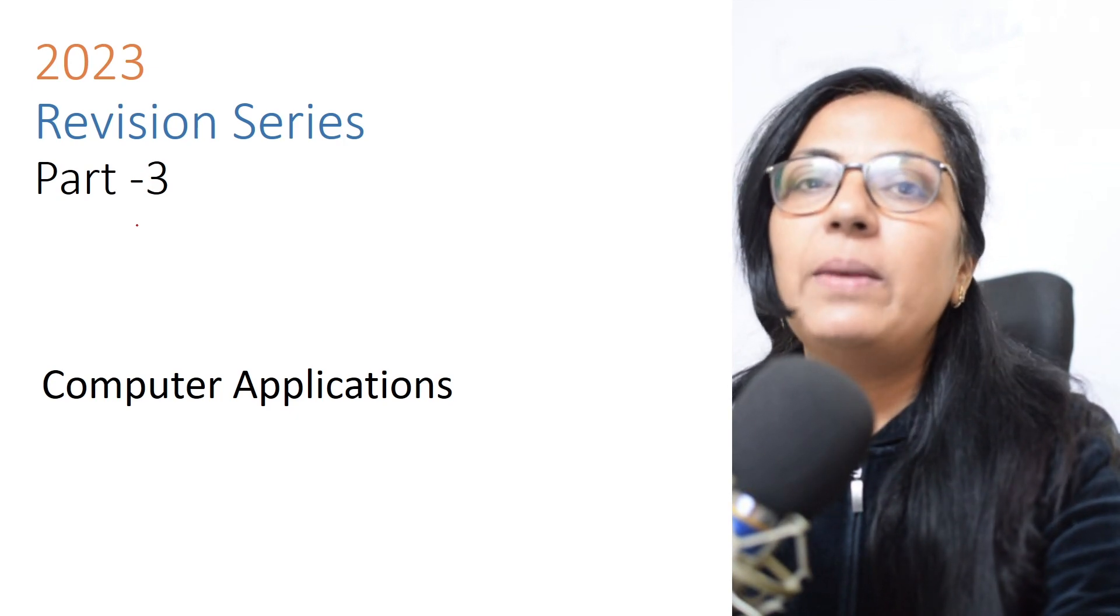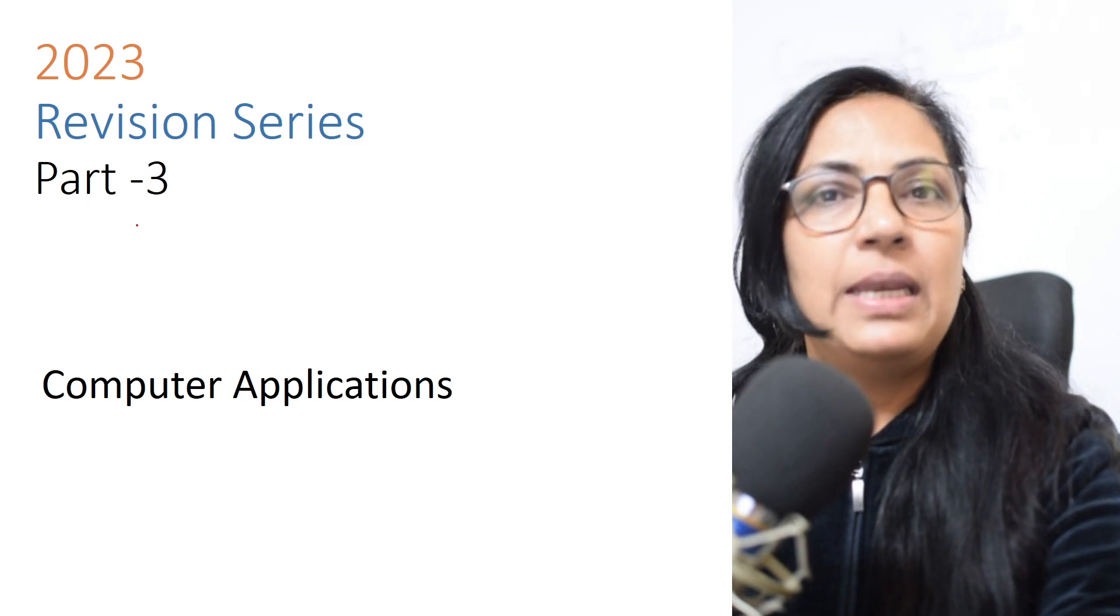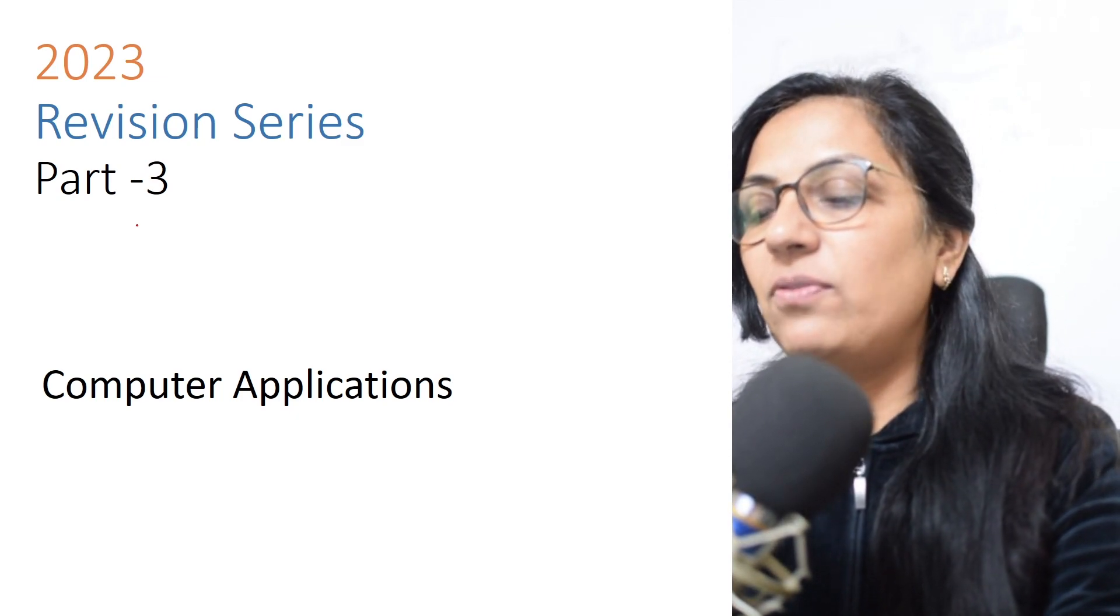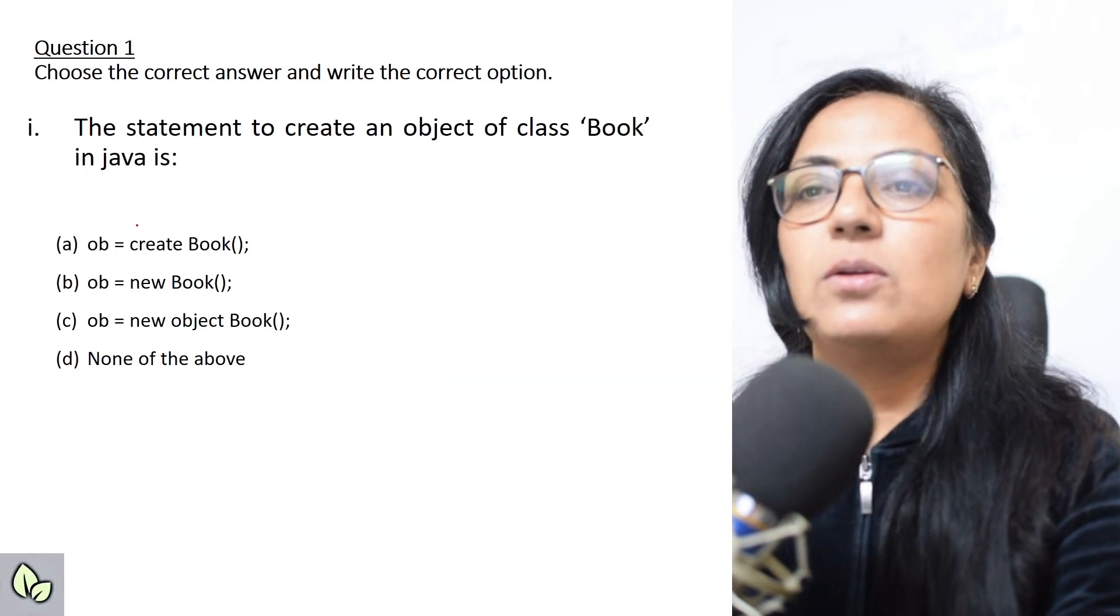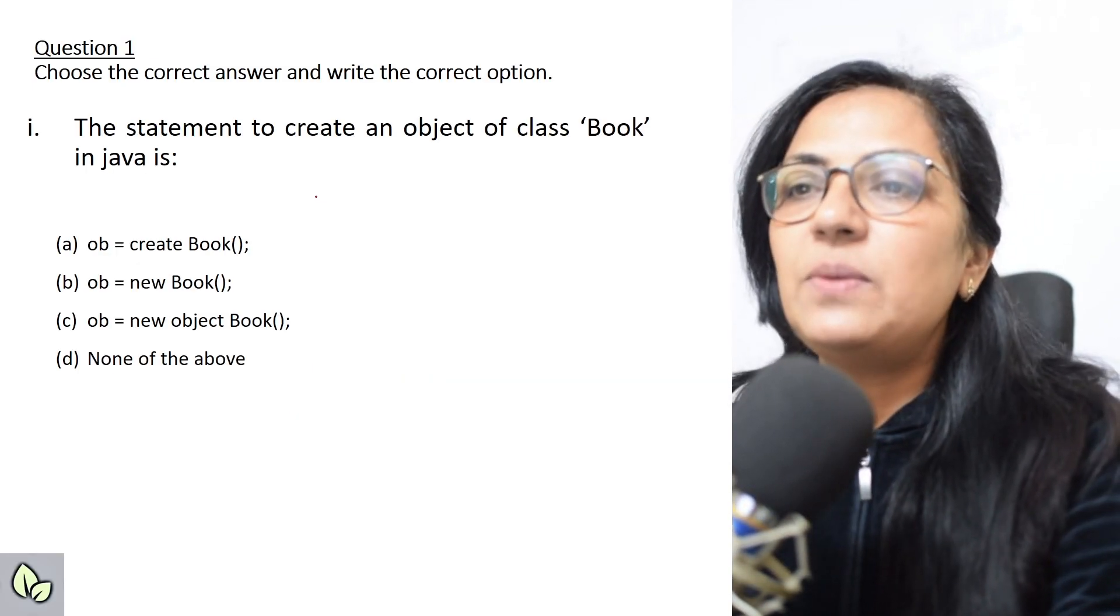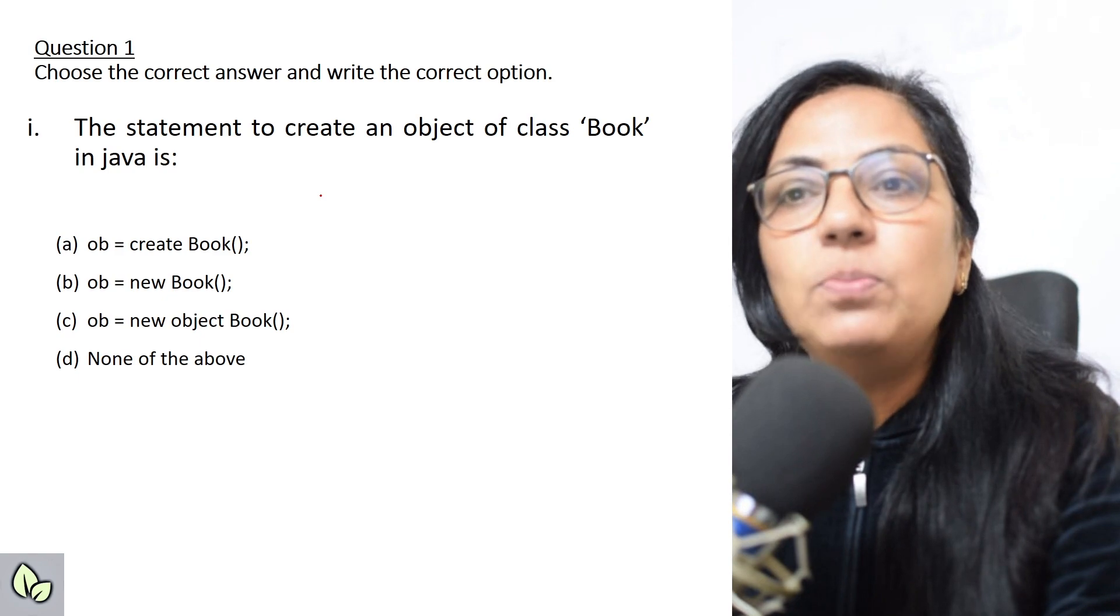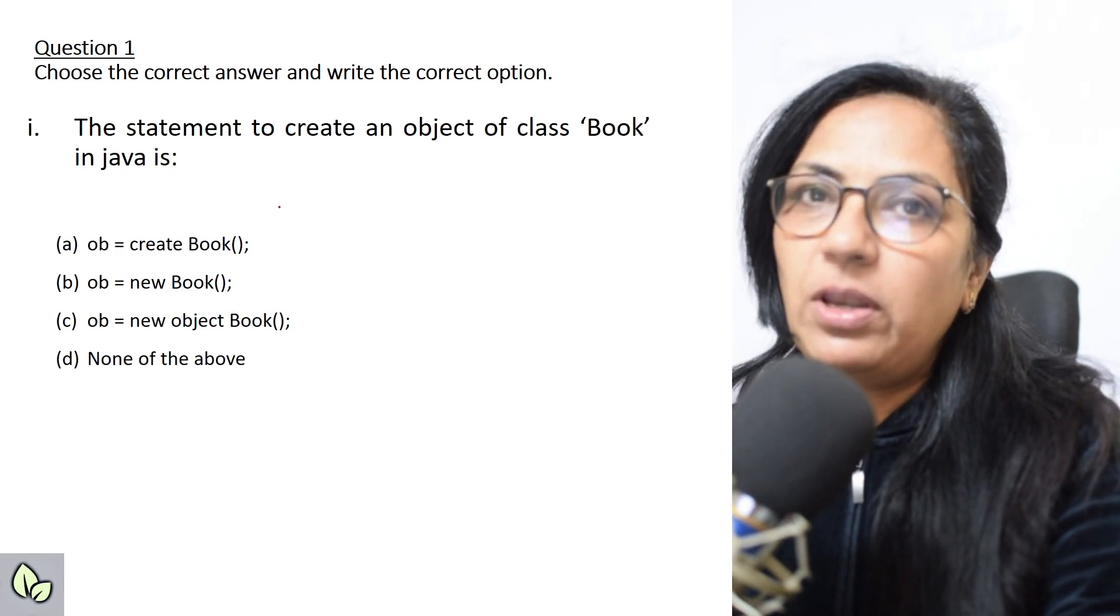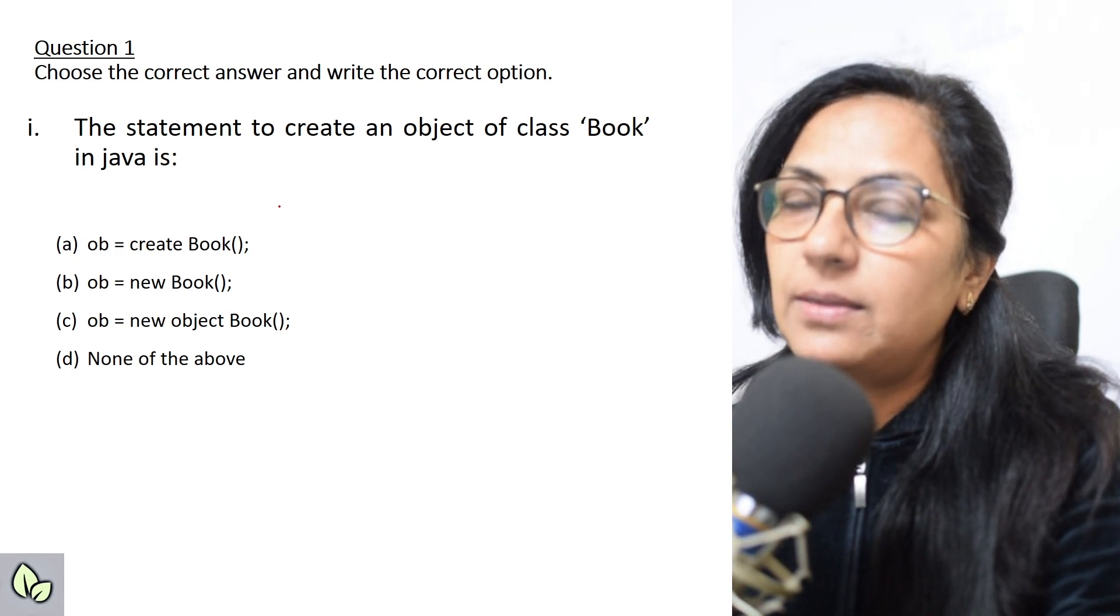From this part onwards, we are going to include one program as well, along with 10 MCQs and five short question answers. Without wasting time, let us start with the first question MCQ based. The statement to create an object of class Book is, and four options are given. Children, please pause the video here and find the correct answer.